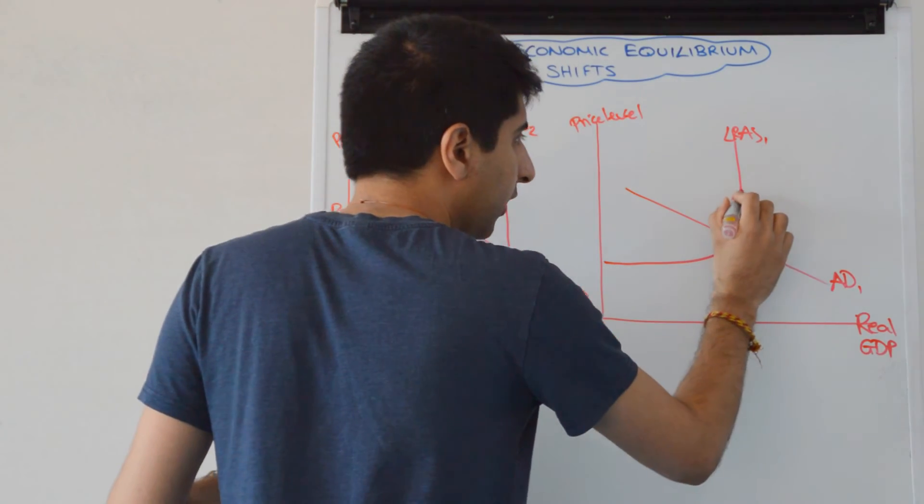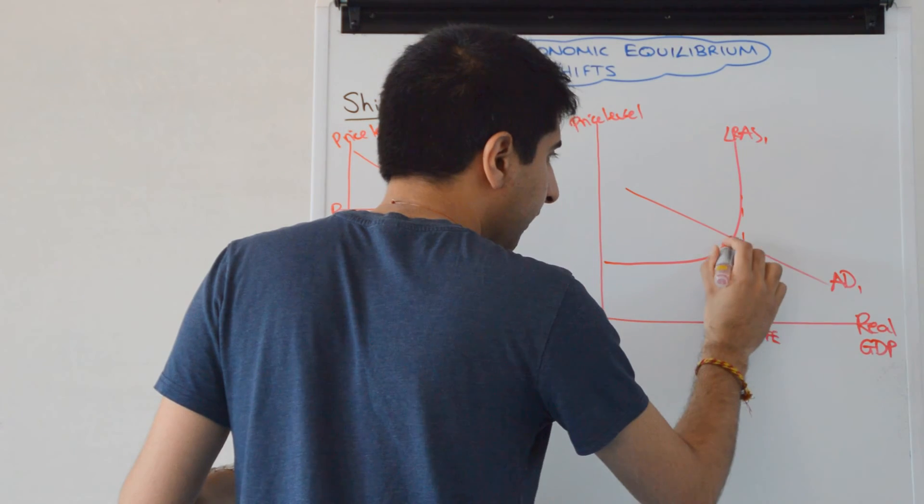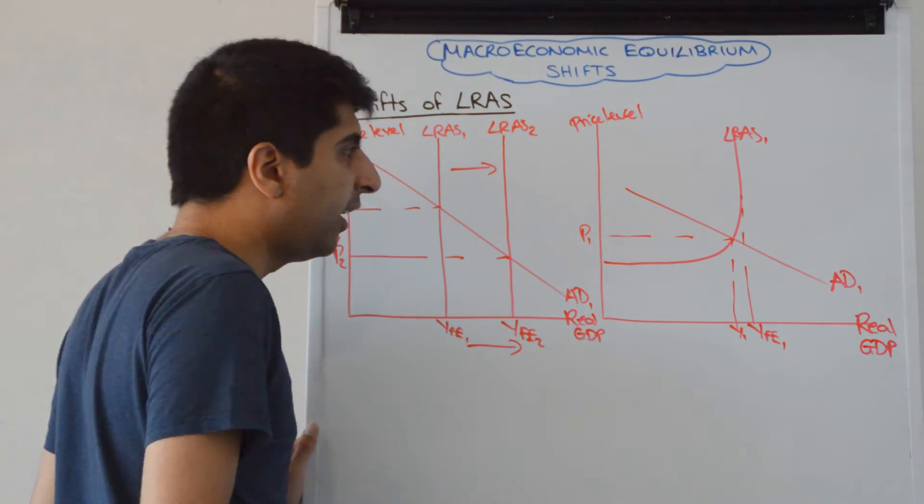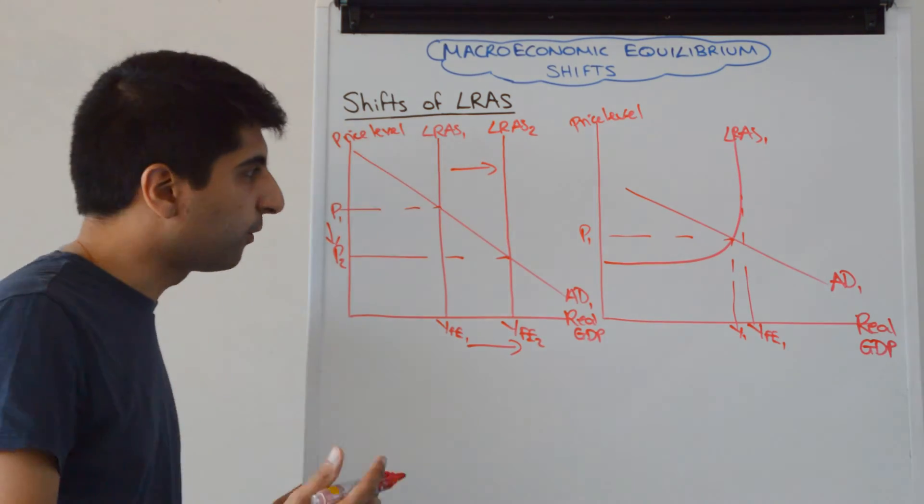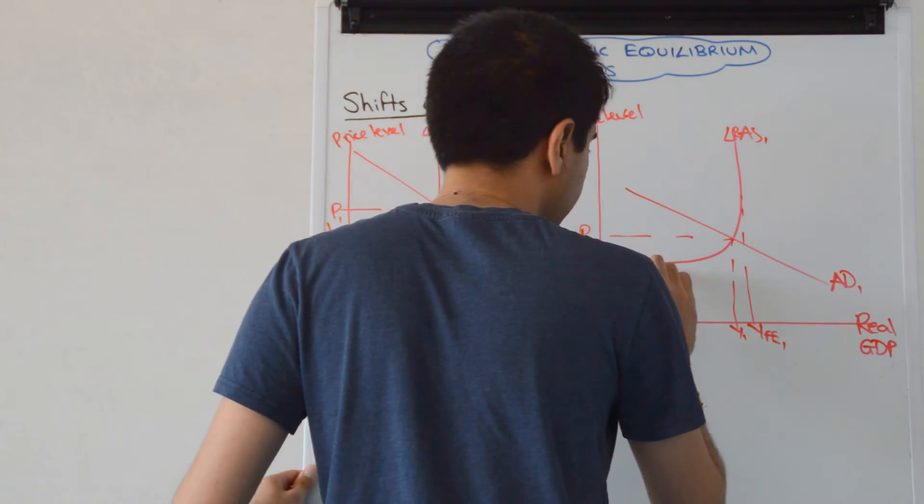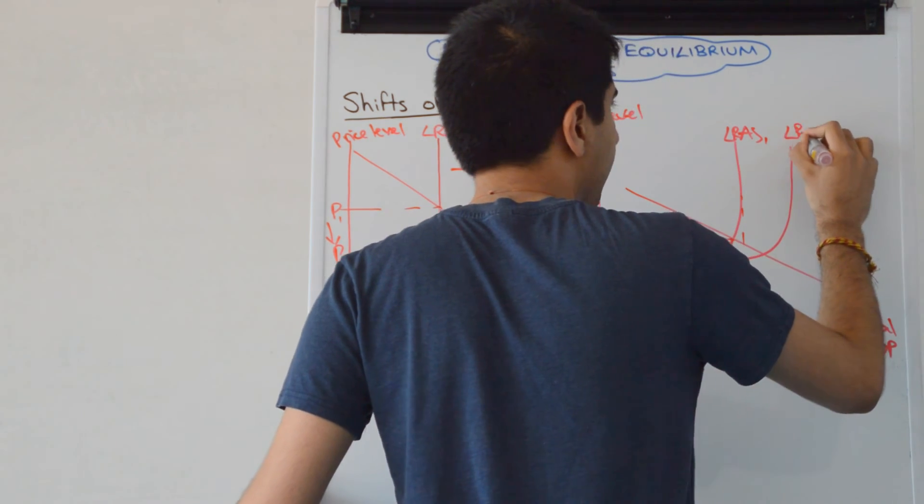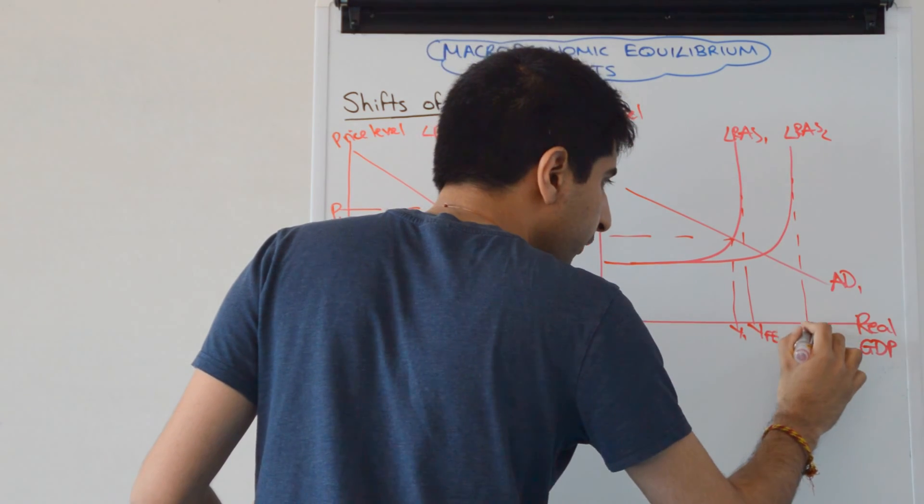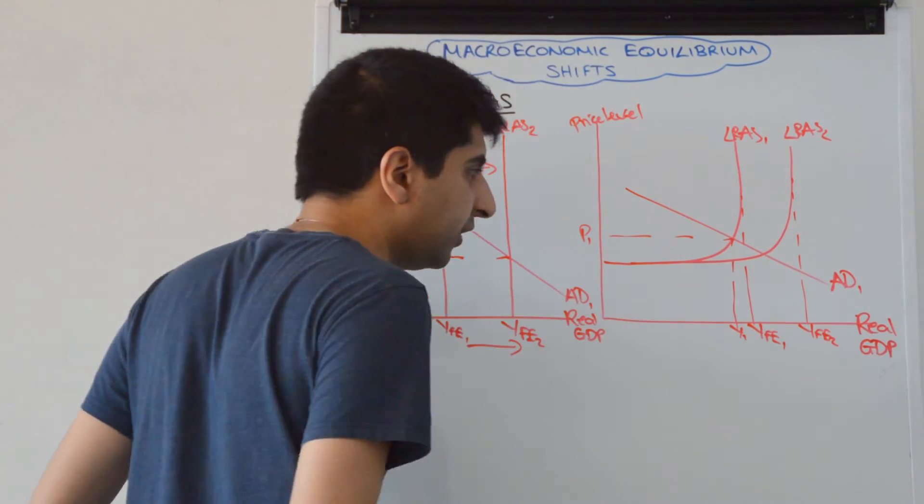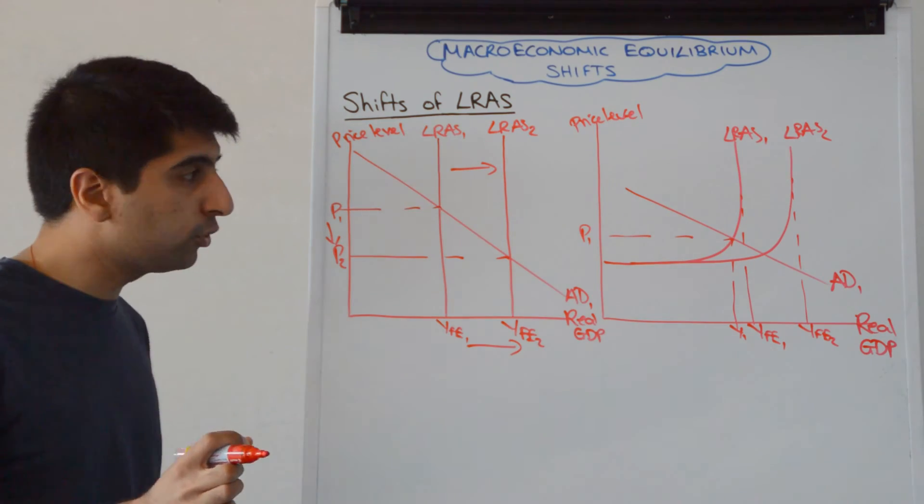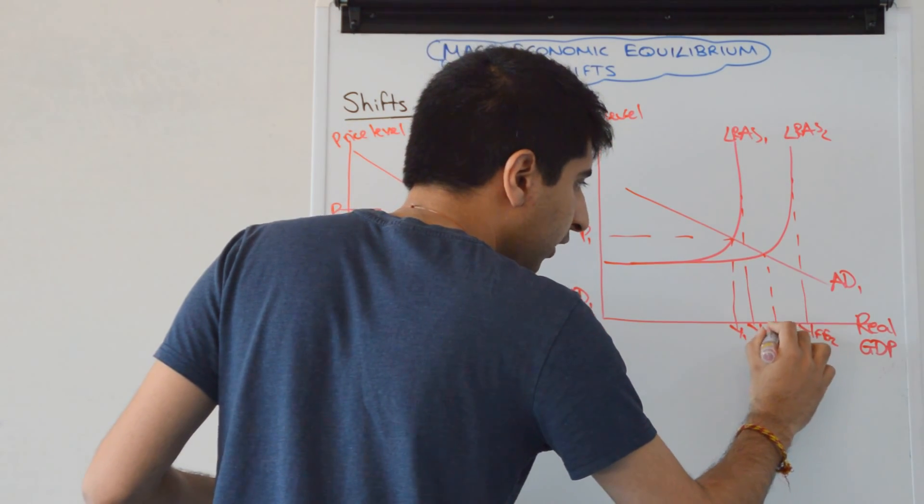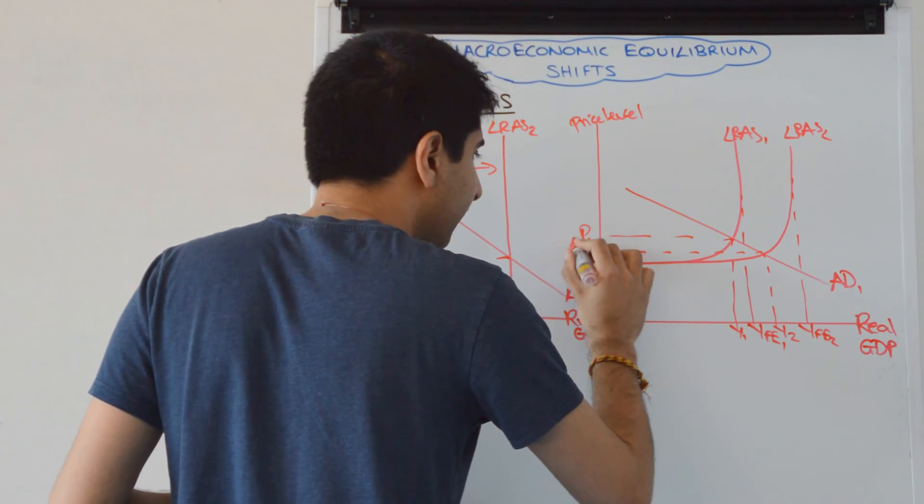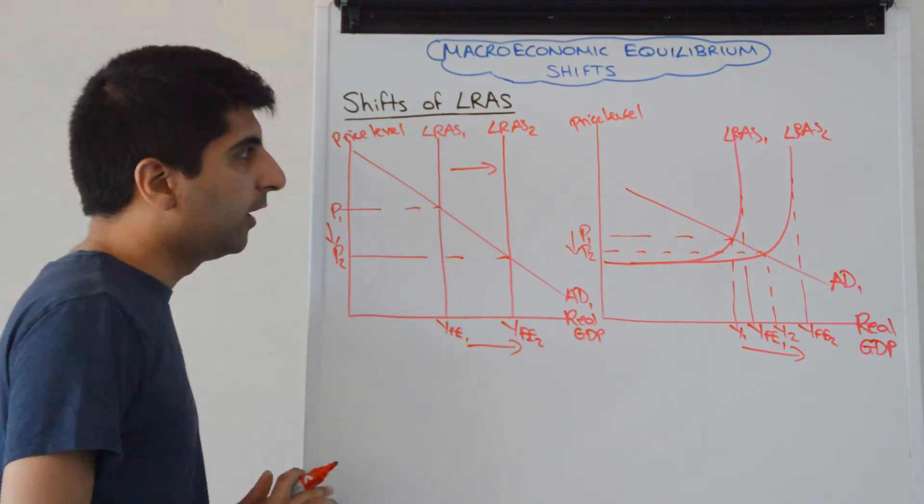If your initial equilibrium is there at Y1, and we've got the price level there at P1, then shift LRAS to the right, like this. So from LRAS1 to LRAS2. What we're then showing is a new full employment level of output from YFE1 to YFE2. So there's your increase in potential growth, but then you've also got an increase in actual growth from Y1 to Y2, and a reduction in cost-push inflationary pressure from P1 to P2.